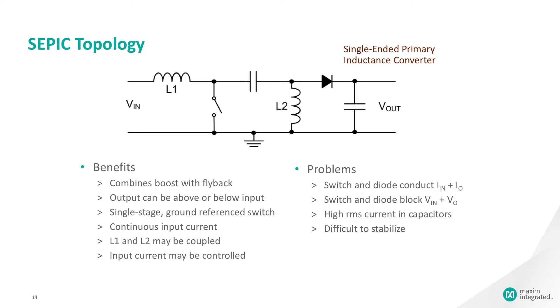A SEPIC is essentially a boost converter, followed by a buck-boost converter. Therefore, it is similar to a traditional buck-boost converter. But this topology has the advantage of having a non-inverted output. In other words, the output is the same voltage polarity as the input.